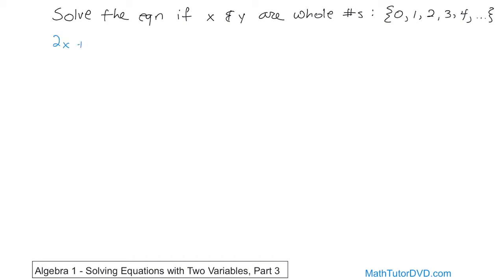So 2x plus y equals 6. Now how do you solve an equation like this? Well, the critical piece of information that you're given is that x and y are whole numbers. So you know x can be any of these numbers. All we need to do is stick these numbers in for x and start calculating what y is, and then we'll see what we get.